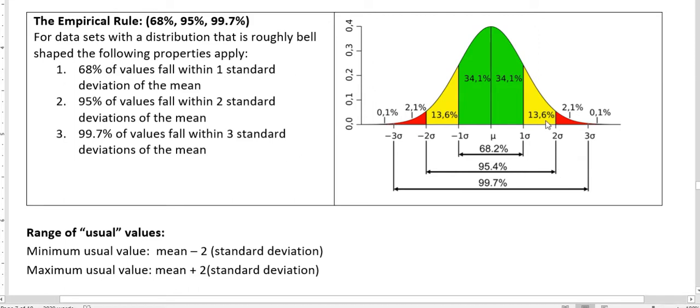So most of the time when we look at data that's roughly distributed, symmetrically distributed, we see that 95 percent of the data values lie within two standard deviations of the mean.